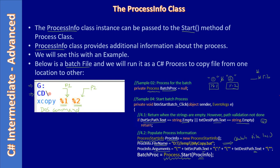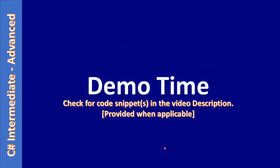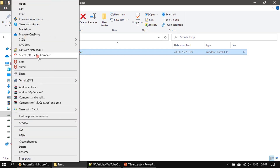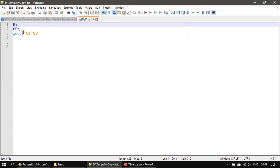I provided G: cd \ and run xcopy from the G root — this is just for demonstration purposes. You can use any kind of DOS commands and pass arguments using the ProcessStartInfo Arguments member. Now it's time to go to the demo. Here you can see D:\temp\mycopy.bat. You can see it has G:, cd, xcopy %1, and %2.